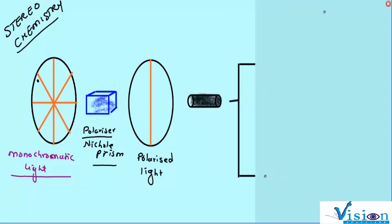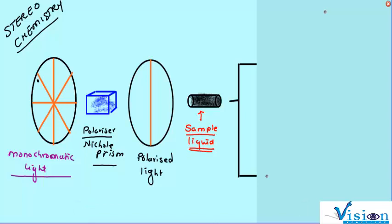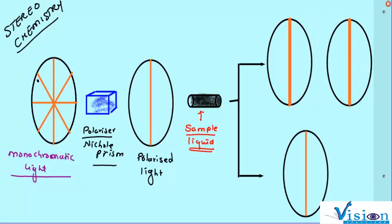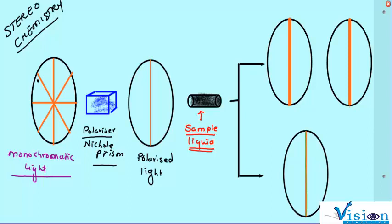When we pass this light through a sample, there are two possibilities. The first possibility is that this light passes and it remains the same. If there is no change in the direction of plane of propagation, then it is an optically inactive sample.